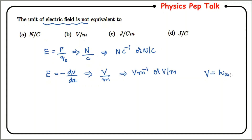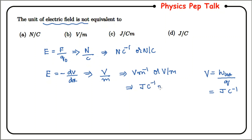Again, we know that potential is defined as the work done in bringing a unit positive test charge from infinity to the given point, given by W divided by q. From this, the unit of potential is Joule per Coulomb. Substituting in Volt per meter gives us Joule Coulomb to the power of minus one, meter to the power of minus one.